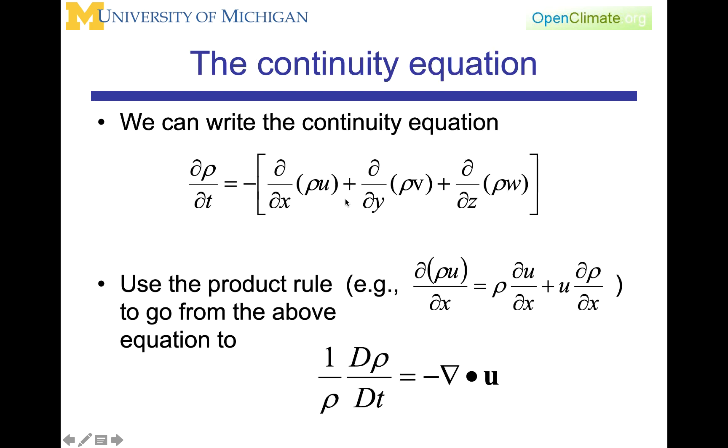We can rewrite the continuity equation, taking it out of that vector notation and rewriting the right-hand side in terms of the partial derivatives with respect to x, y, and z of the components of the mass flux in the u, v, and w velocity directions. We can then use the product rule and rewrite the continuity equation as 1 over ρ big d ρ dt, the material derivative, equal to minus the divergence of simply the velocity field.